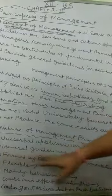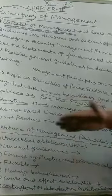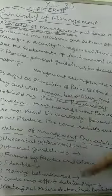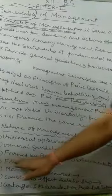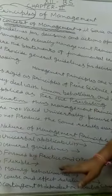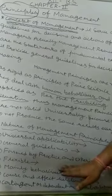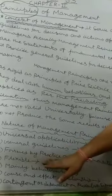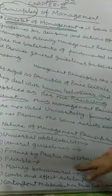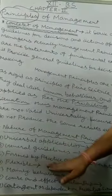Second is General Guidelines. The whole set of Principles of Management is a bundle of guidelines for managers on which they can take action or make decisions. Third, they are Formed by Practice and Experimentation. The principles of management do not appear suddenly; they are formed gradually on the basis of experimentation and practice by various managers of different organizations.